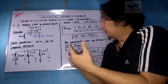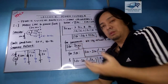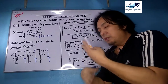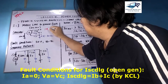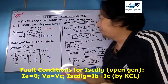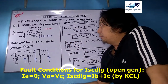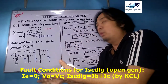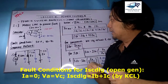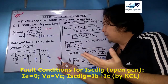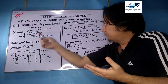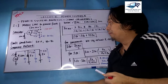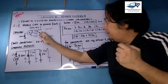We will now discuss the double line-to-ground fault, or ISC DLG. We consider again an open generator. This is similar to 2B but the difference is phases B and C are grounded, meaning they are short-circuited and also grounded to the neutral. Z0 prime equals Z0 plus 3ZN, where ZN is the neutral impedance.